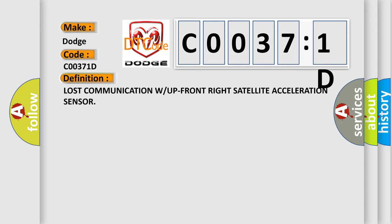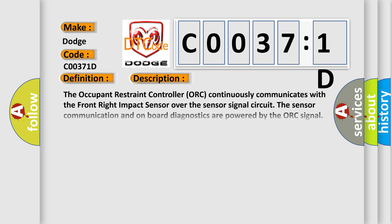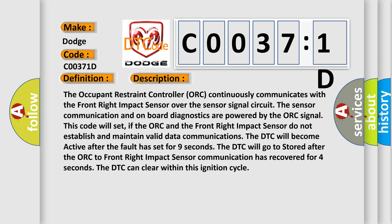And now this is a short description of this DTC code. The Occupant Restraint Controller (ORC) continuously communicates with the front right impact sensor over the sensor signal circuit. The sensor communication and on-board diagnostics are powered by the ORC signal. This code will set if the ORC and the front right impact sensor do not establish and maintain valid data communications.